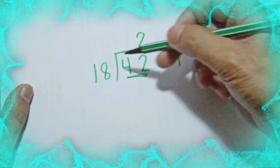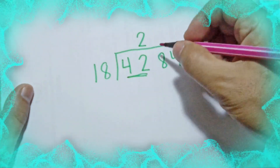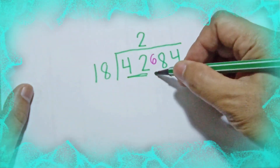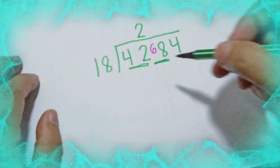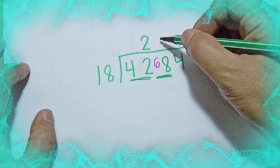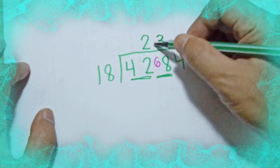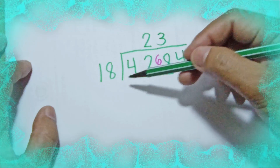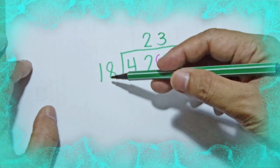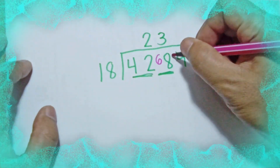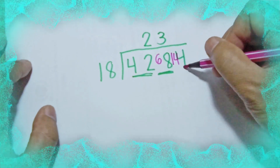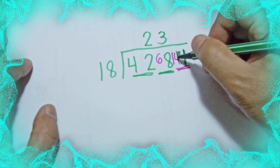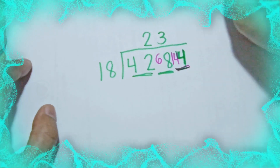42 minus 36 is 6, so we write 6 to the next number, and 8 will become 68. 68 divided by 18: we can make 3. 3 times 18 is 54, and 68 minus 54 is 14. We carry over 14, so 4 will become 144.